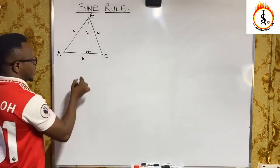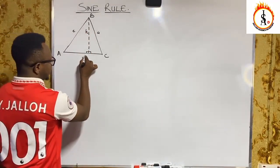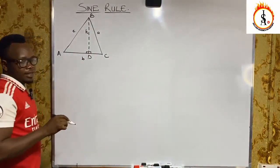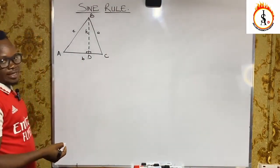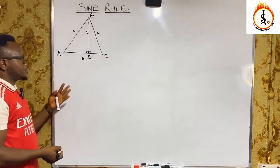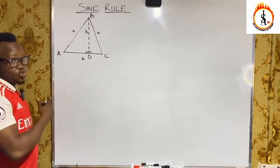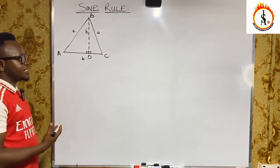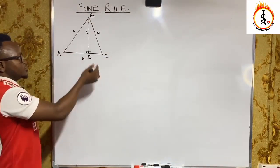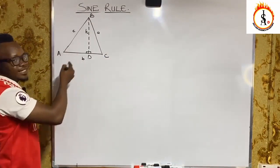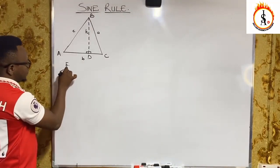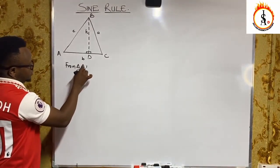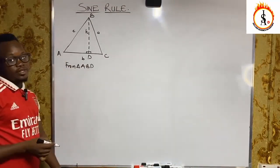Where this perpendicular line touches AC, we refer to as uppercase letter D. So in this situation, we now have two triangles: triangle ABD and triangle BCD. We start off from triangle ABD.